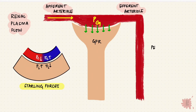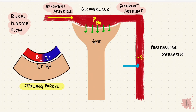By the time plasma reaches the peritubular capillaries, the hydrostatic pressure in the capillaries is lower than in the interstitium. That means the direction of flow is opposite — from the interstitium towards the capillaries — and that's reabsorption. So this arrangement helps filtration happen at the glomerulus, where the pressure is higher, and reabsorption happen at the tubules, where there's lower pressure.